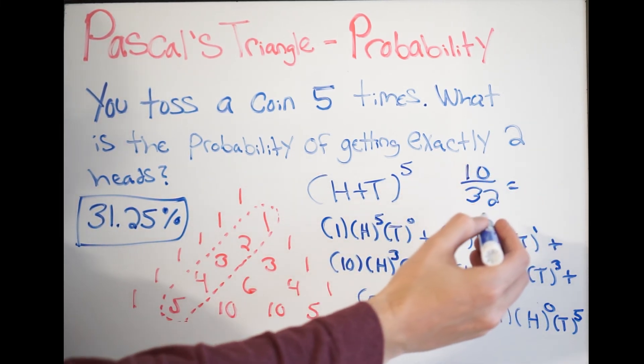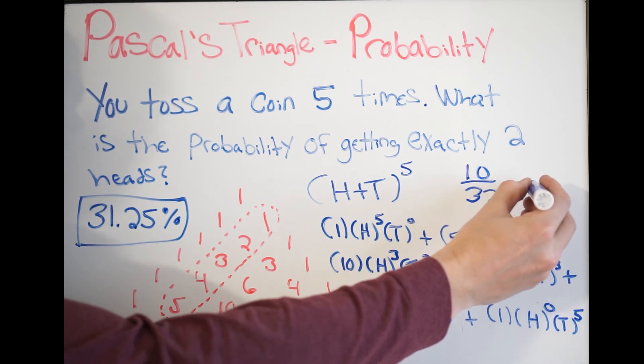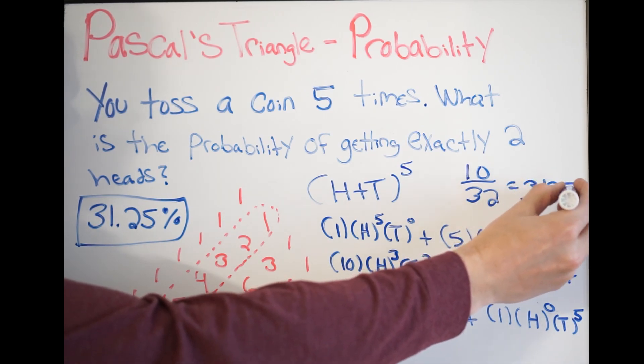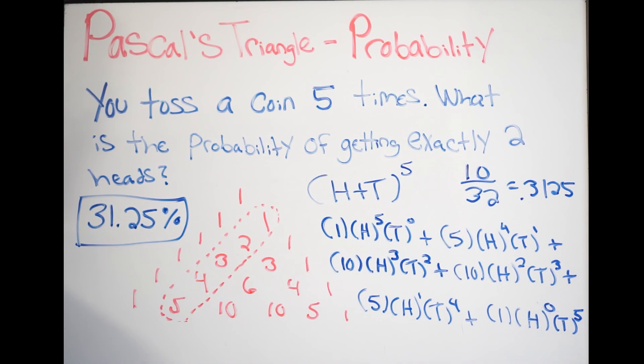Again, the decimal value here is 0.3125. Just multiplying it by 100 so we can get the percent value. And there it is. So, again, there is a 31.25% probability of getting exactly two heads. And that is it.